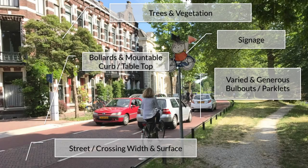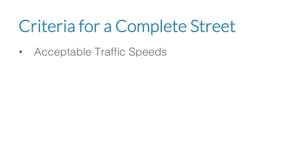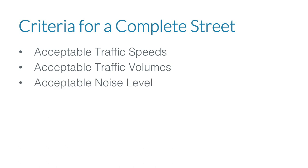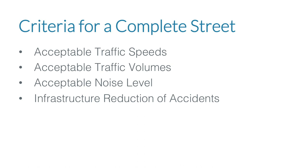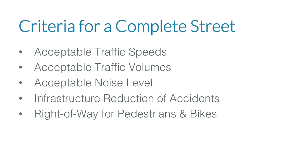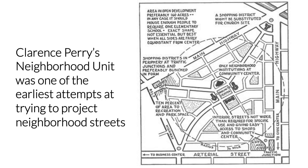Let's look at another streetscape. Here we see trees and vegetation, unique signage, bollards and mountable curbs, generous bulb-outs, and a unique surface — all of which facilitate a more comfortable cycling and walking environment. Appleyard and Jacobs would state that a complete street requires acceptable speeds, volumes, and noise levels, plus infrastructure supporting accident reduction and improved right-of-way for pedestrians and cyclists. This is not new — it goes back to the middle of the last century. One of the first attempts was Clarence Perry's Neighborhood Unit, established in 1929, though suburban build-offs of that did not capture enough right-of-way to make streets truly complete.